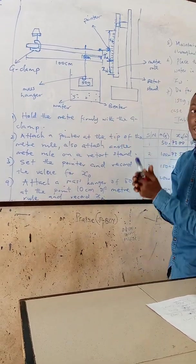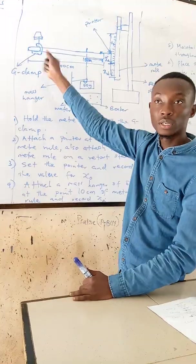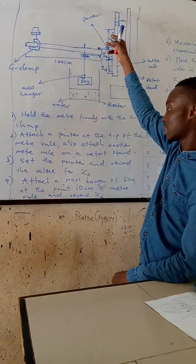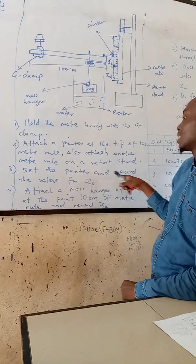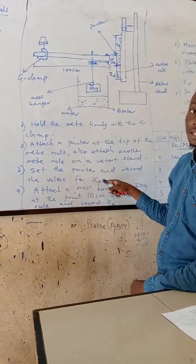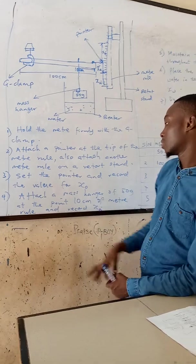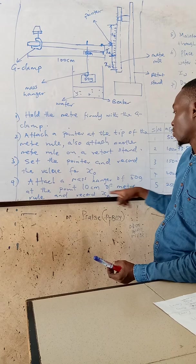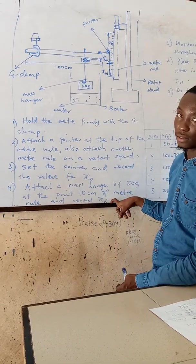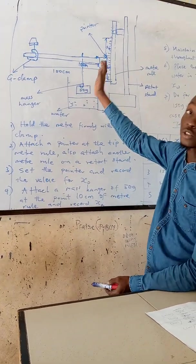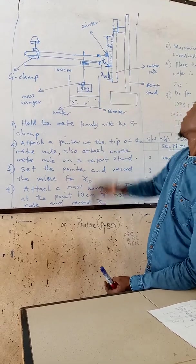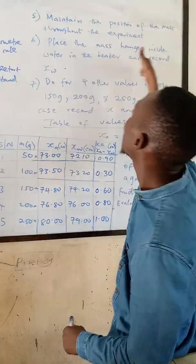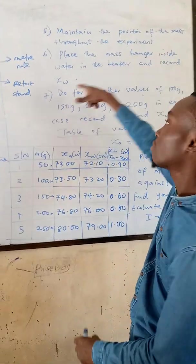Hold the meter rule firmly with a G-clamp. Attach a pointer at this T and record the value X0. Attach a mass hanger of 50 grams at the point 10 cm of the meter rule and record XA. This 10 cm of the meter rule is going to be fixed throughout the whole experiment. Maintain the position of the mass for the experiment.